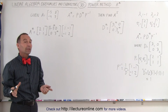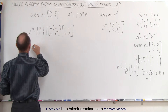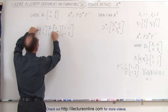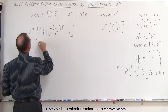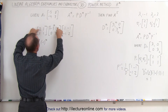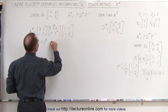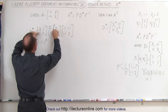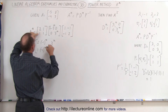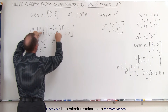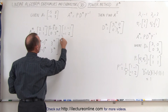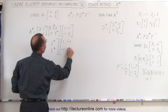Now we multiply the first two matrices together. We get 2 times negative 1 to the nth power for the upper left, then 2 times 0 plus 1 times 3 to the nth power. For the lower row, 1 times negative 1 to the nth power, and 1 times 3 to the nth power. Then we multiply that result times the P inverse matrix: 1, negative 1, negative 1, 2.